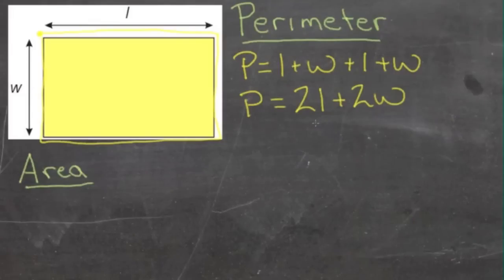And using the distributive law, we can actually pull the two out, since both letters are multiplied by the same number, and we get the most concise version, which would be P equals two times the quantity L plus W.